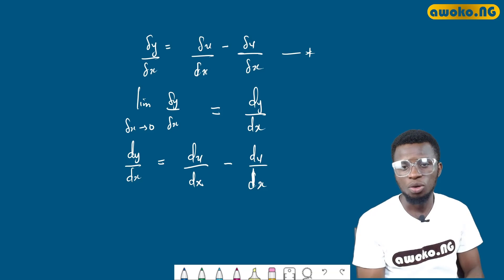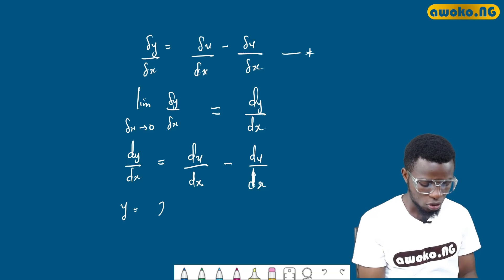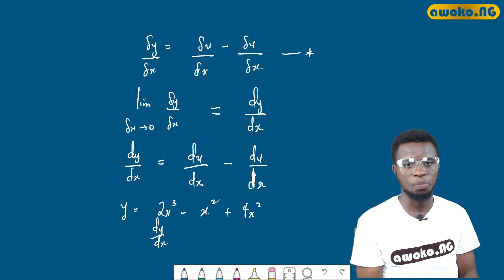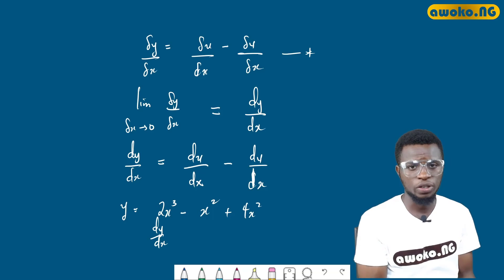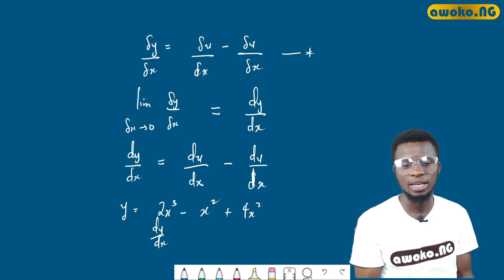In some cases, you might be given a function with both addition and subtraction of functions. For instance, if we have y equals 2x to the power 3 minus x squared plus 4x squared, and we are asked to find dy/dx. What we have to do is differentiate each function separately and include their respective signs. This takes us to practical examples.